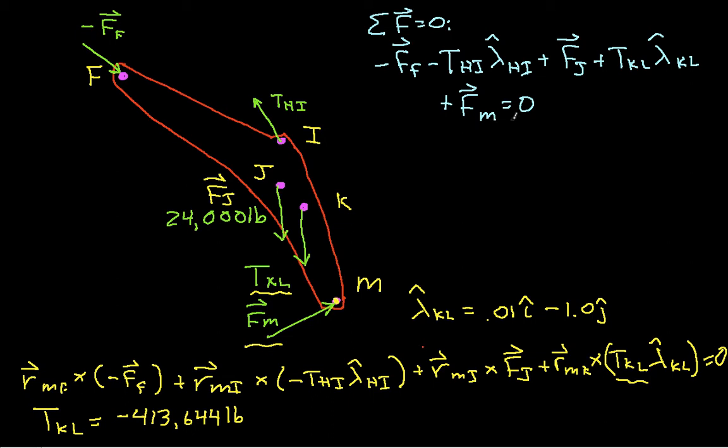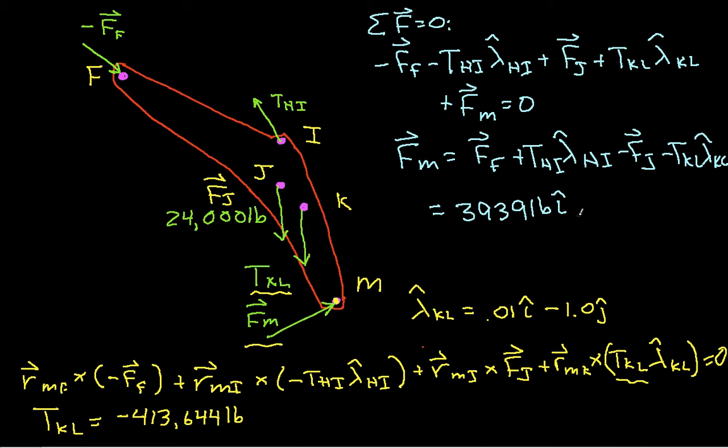And so if we take this, put F-M on one side, it's equal to F-F plus T-H-I lambda-hat H-I minus F-J minus T-K-L lambda-hat K-L. And if we compute this all out, we get then 3,939 pounds in the I direction minus 347,625 pounds in the J direction.